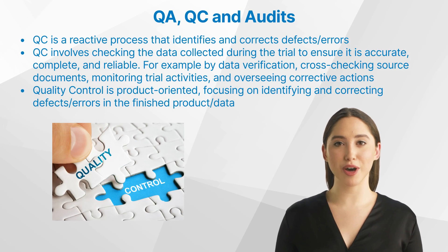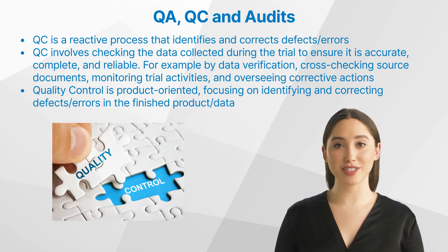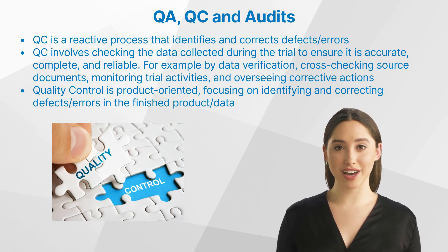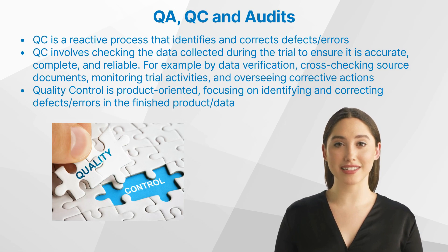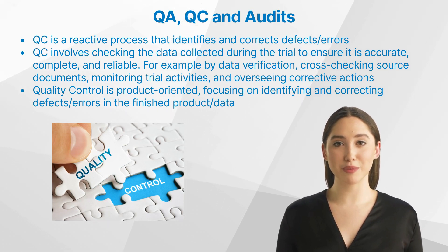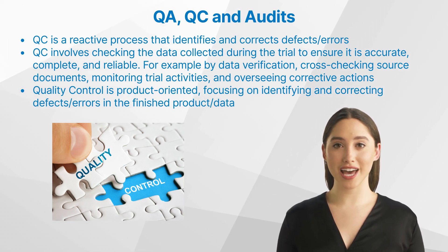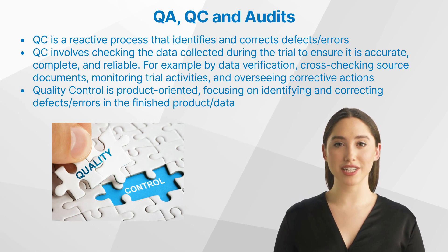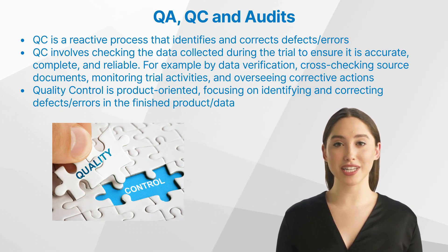Let us go on with understanding quality control in clinical trials. While quality assurance focuses on preventing defects through process control, quality control is a reactive process that identifies and corrects defects in the finished product. In a clinical trial context, quality control involves checking the data collected during the trial to ensure it is accurate, complete, and reliable. The role of quality control in clinical trials includes data verification, cross-checking source documents, monitoring trial activities, and overseeing corrective actions when necessary. Quality control differs from quality assurance in its focus: while quality assurance is process-oriented, aiming to prevent defects by ensuring the quality of the processes, quality control is product-oriented, focusing on identifying and correcting defects in the finished product data.